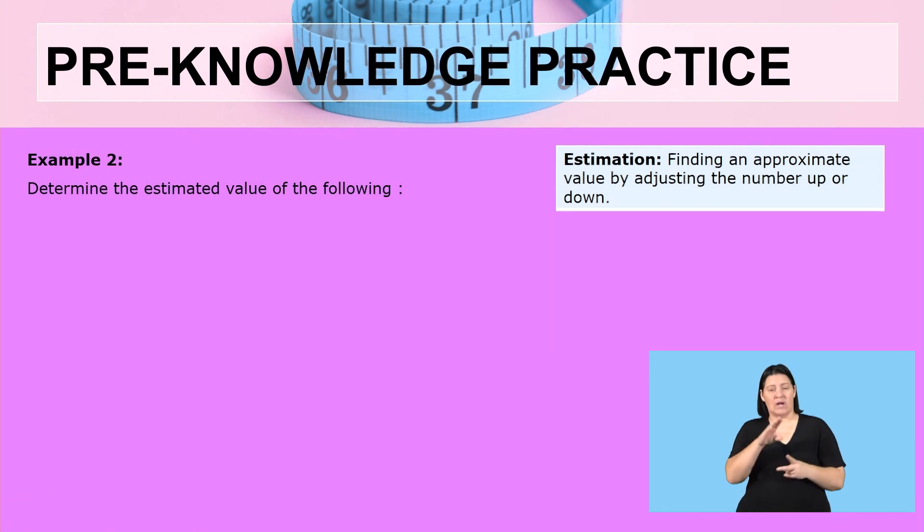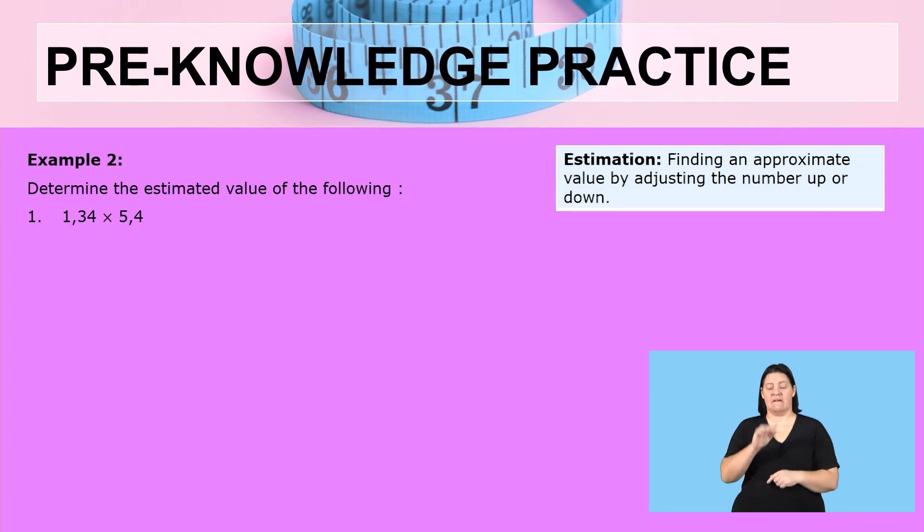Now let us look at the second example. Determine the estimated values of the following. The first question is 1,34 × 5,4. I hope you have your calculators with you. Let us calculate together now. We multiply 1,34 by 5,4. The answer we are having is 7,236. So what is estimation?